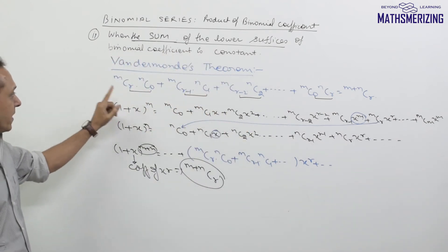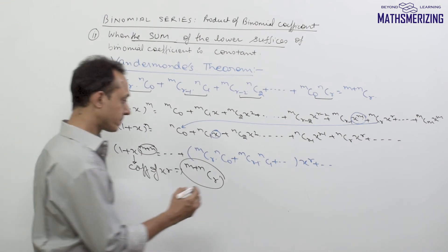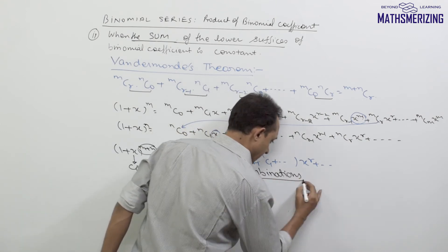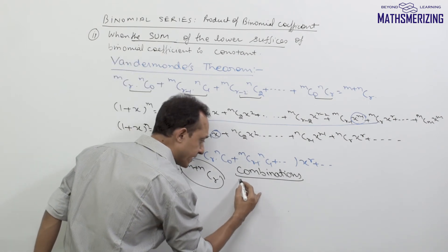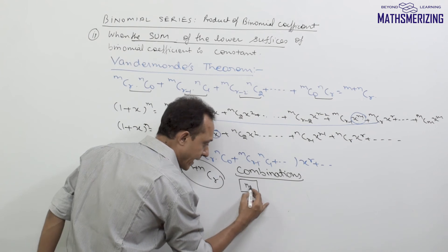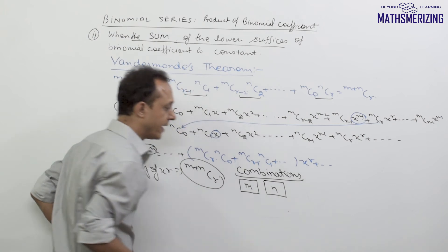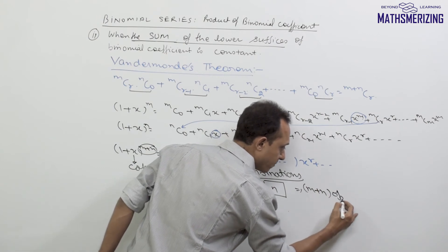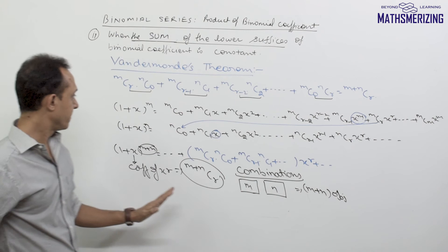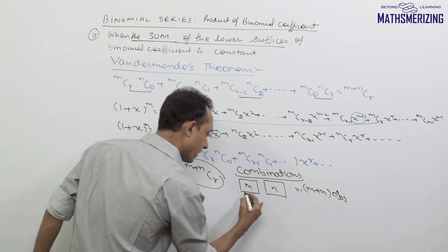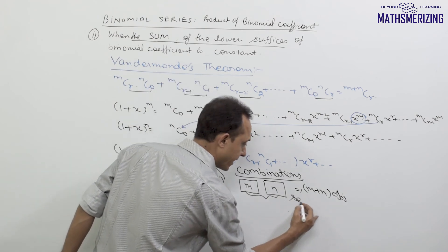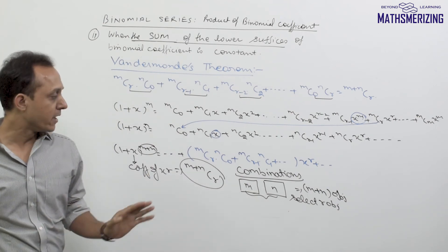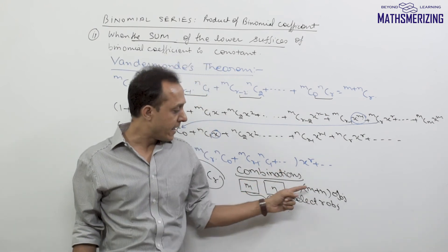There is another way of solving this question using a combinatorial argument. Suppose we have two separate groups of distinct objects: in the first group there are m objects and in the second group there are n objects, giving m+n distinct objects altogether. We need to select r objects from these m+n distinct objects, which can be done in m+nCr ways.